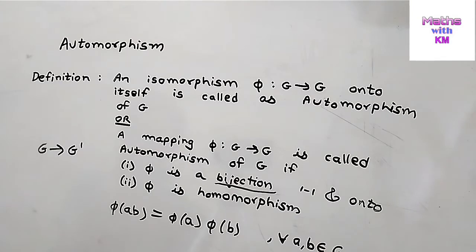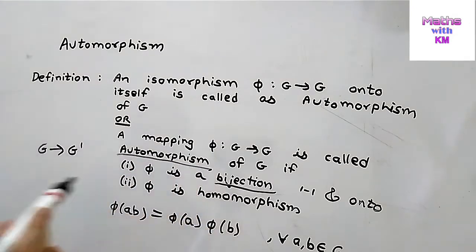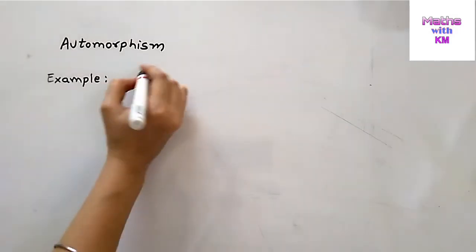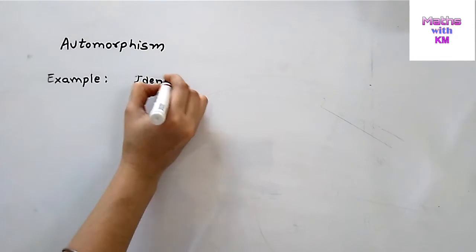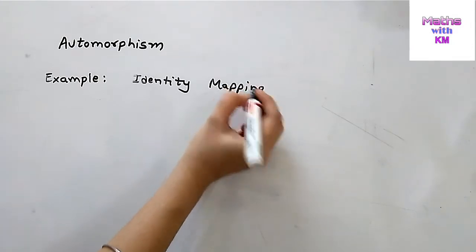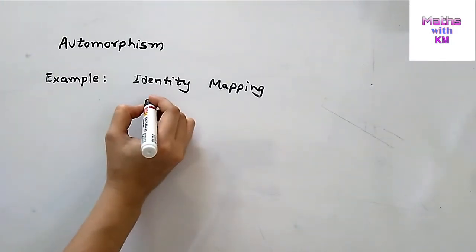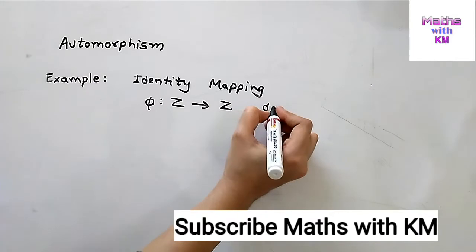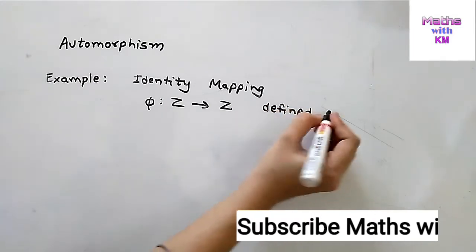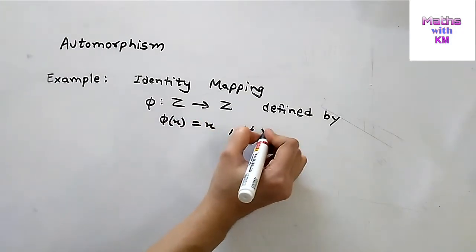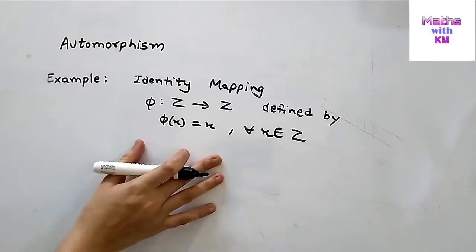Now let's look at an example: the identity mapping, which is an automorphism. The identity mapping is defined by phi, which is a mapping from Z to Z, defined by phi of x equals x for all x belonging to Z.